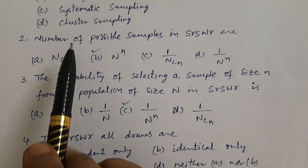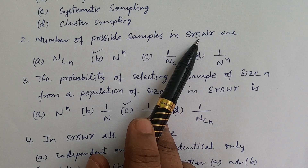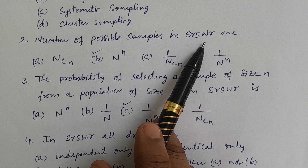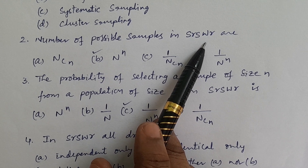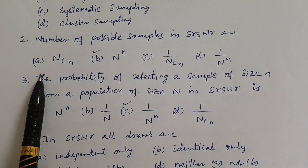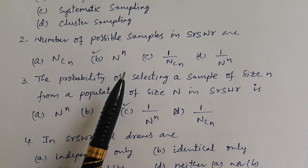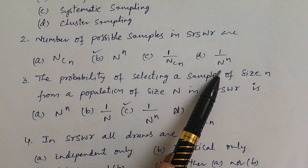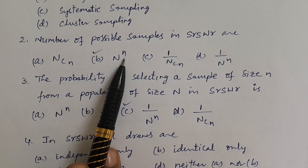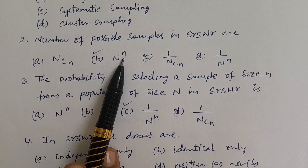Question number 2. Number of possible samples in SRSWR — which means simple random sampling with replacement. How many possible samples are there? Options: A) capital N C small n, B) capital N power small n, C) 1 by n, D) 1 by n power n. Answer is capital N power small n. For example, if capital N is 10 and small n is 2, then 10 squared = 100.